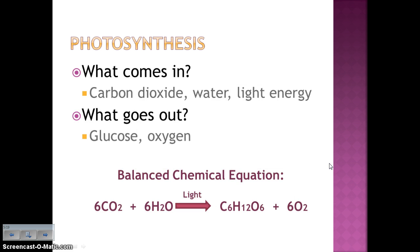What is coming in during photosynthesis? Coming in is carbon dioxide — that's what we give off to plants — water, because you have to water your plants for them to live, and energy from the sun. What is going out is glucose — that's the whole point — and then that byproduct, the gas oxygen, being released.